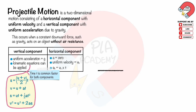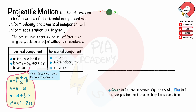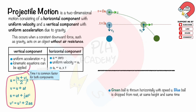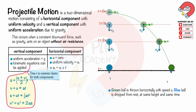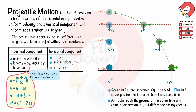Let's compare free fall and projectile motion. When a green ball is thrown horizontally with speed u, and a blue ball is dropped from the same height at the same time — at the start, both balls have zero initial vertical velocity. Every second, both balls fall the same displacement and have the same downward velocity, so they take the same time to fall and have the same acceleration due to gravity. Both balls will reach the ground at the same time.